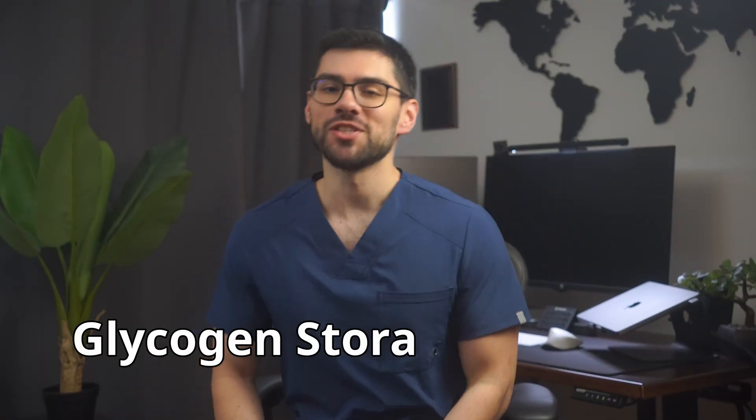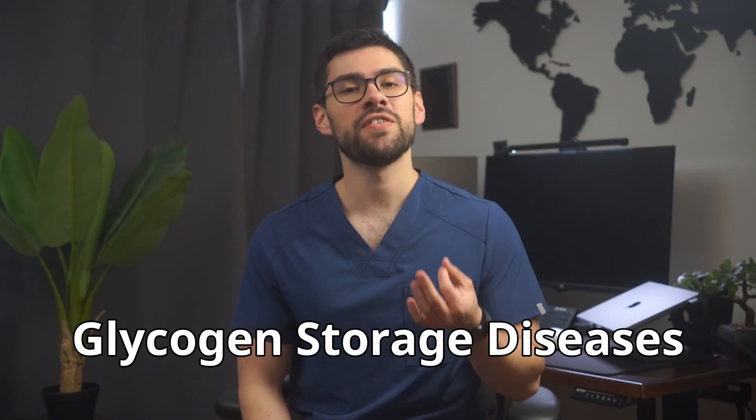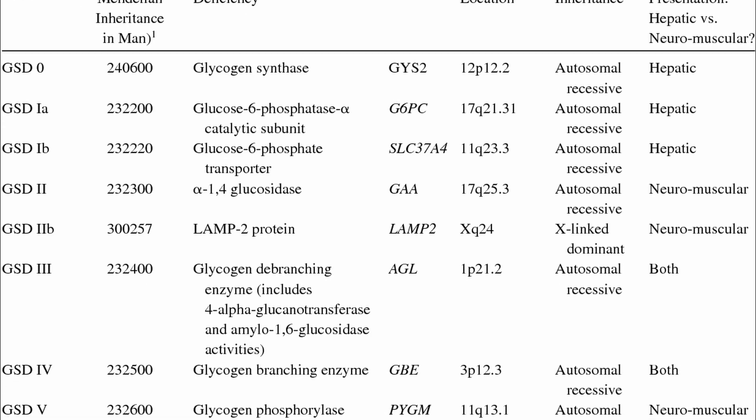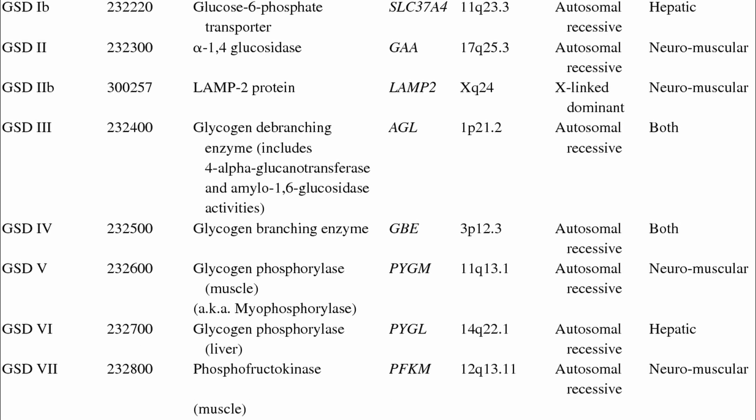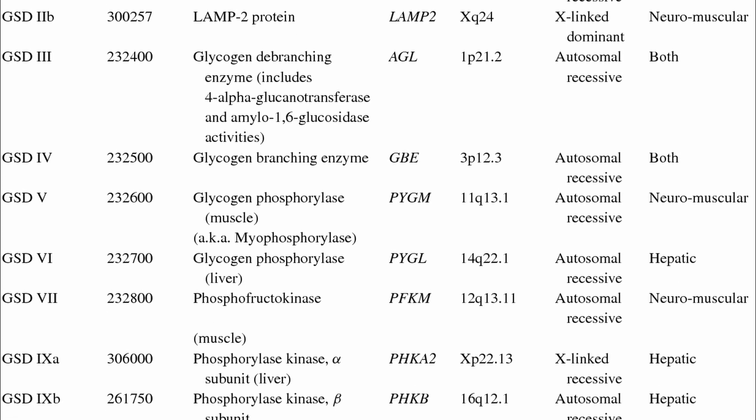Today, we're going to talk about the glycogen storage diseases, a topic that often feels overwhelming because when you first try to study it, there are too many names, too many enzymes and too many types. But if you understand a couple of basic principles, you have a basic framework to organize the main diseases. And if you keep in mind a simple mnemonic to remember the enzymes, you'll see that this topic becomes much easier, both for your exams and your rotations.